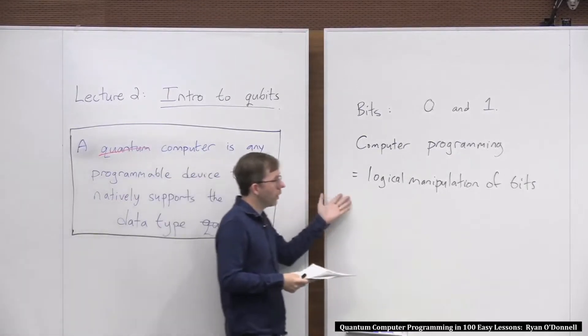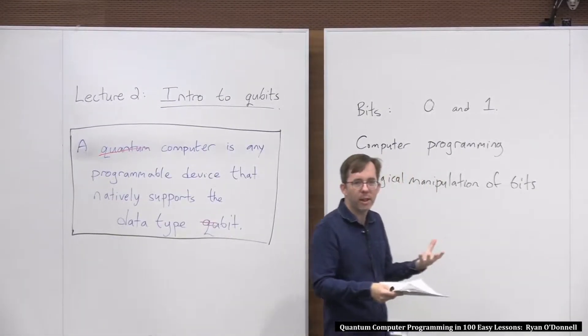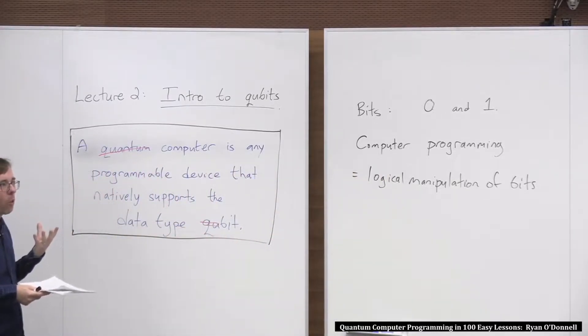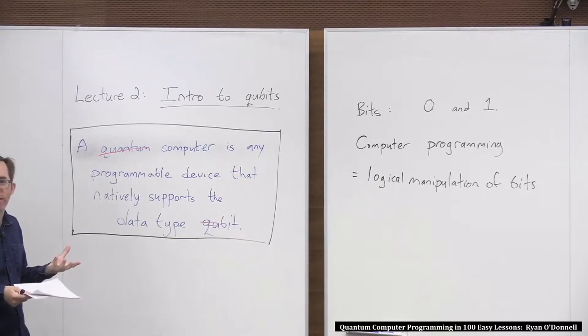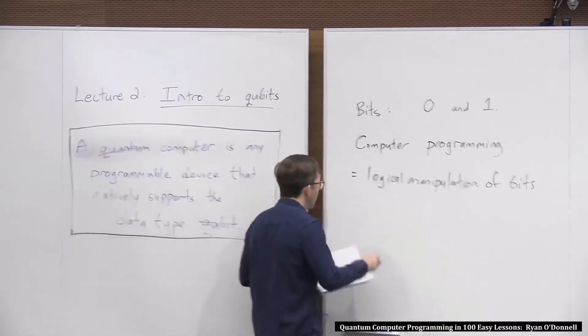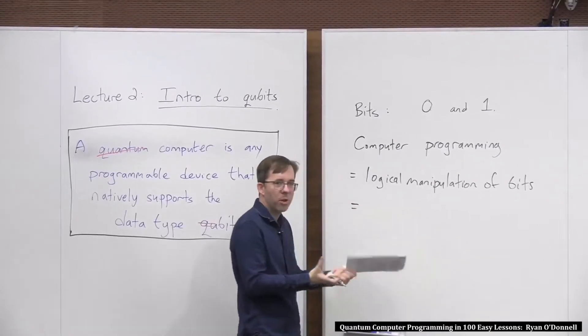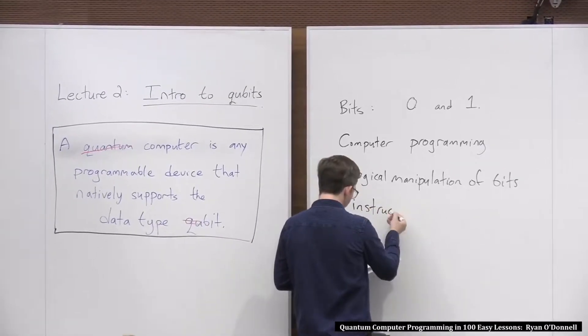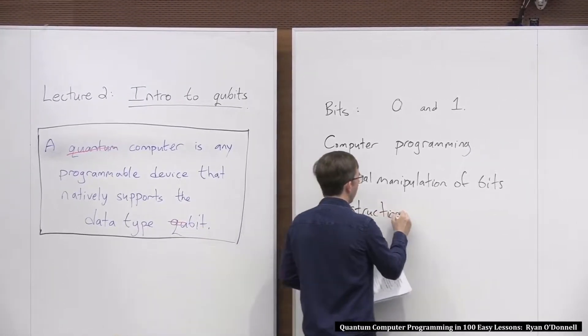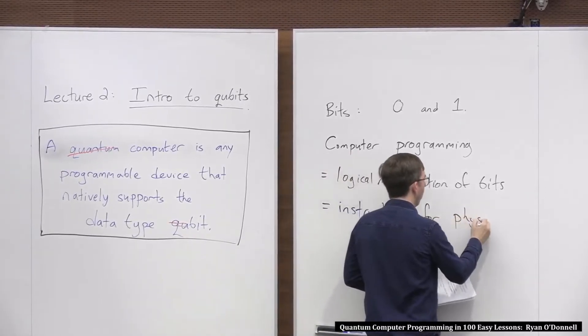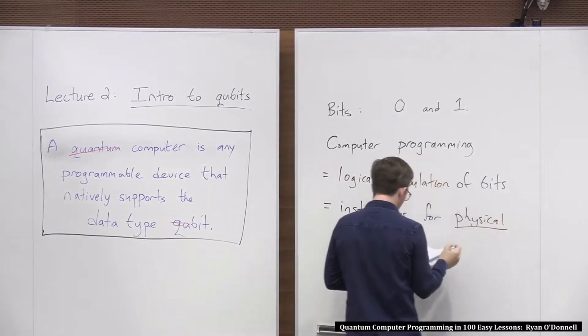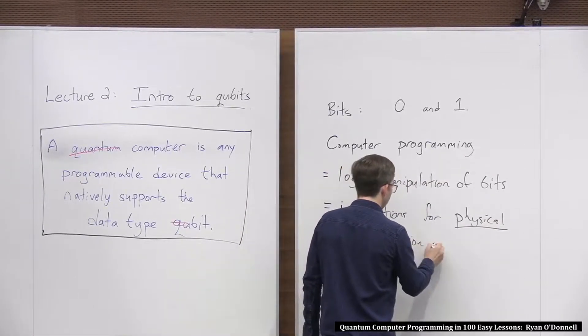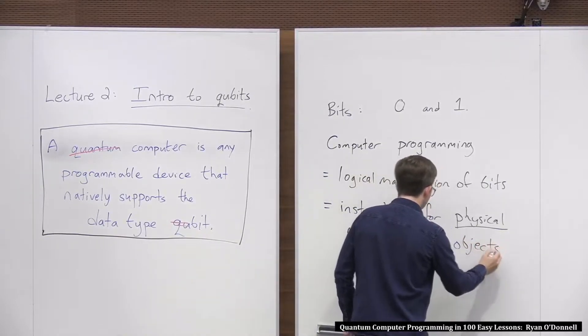If you think about when you write a computer program, okay, maybe it's a high-level language, but ultimately it's manipulating bits. But what are these instructions really doing? They're kind of instructions for physically manipulating physical objects, actually. Because at the end of the day, your computer is composed of physical objects, and these bits are stored via physical objects. So these are also thinkable as instructions for physical manipulation of objects that represent the bits.